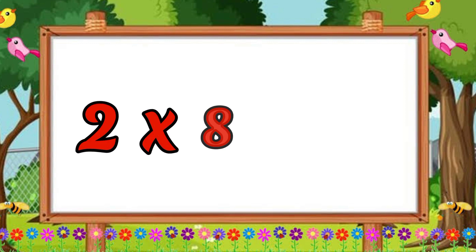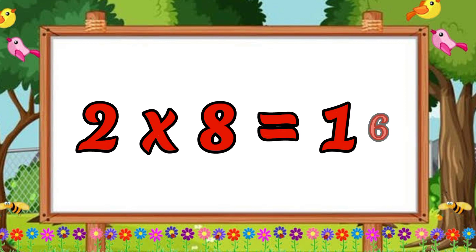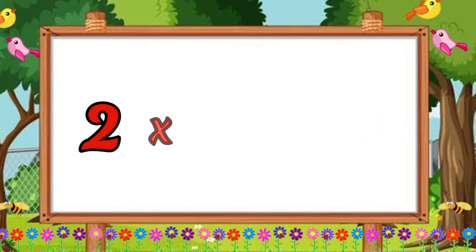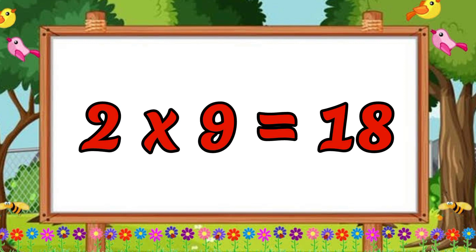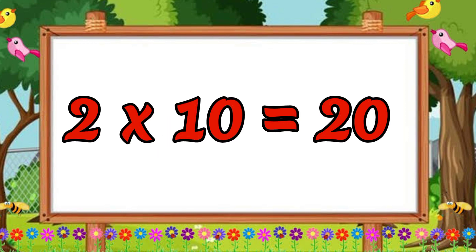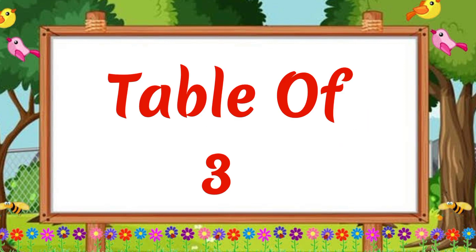Two eights are sixteen. Two eights are sixteen. Two nines are eighteen. Two nines are eighteen. Two tens are twenty. Two tens are twenty.